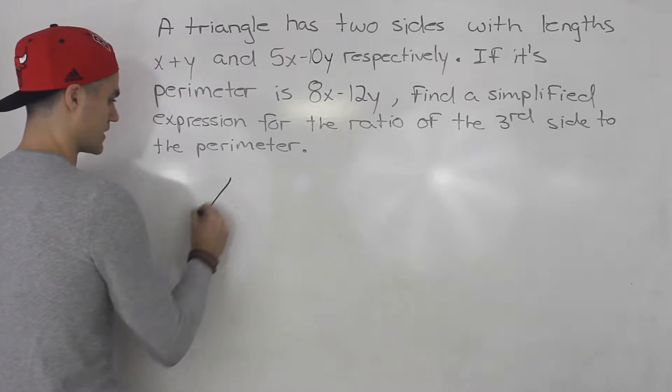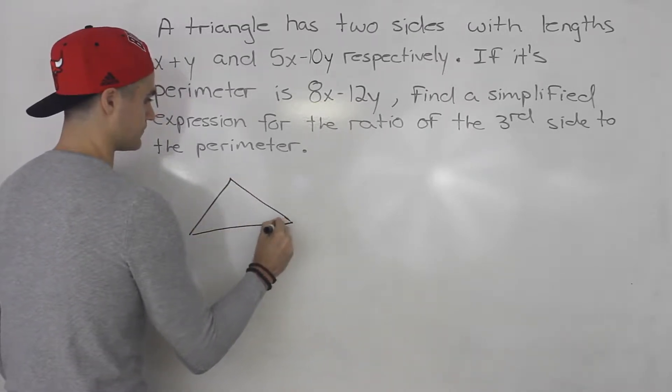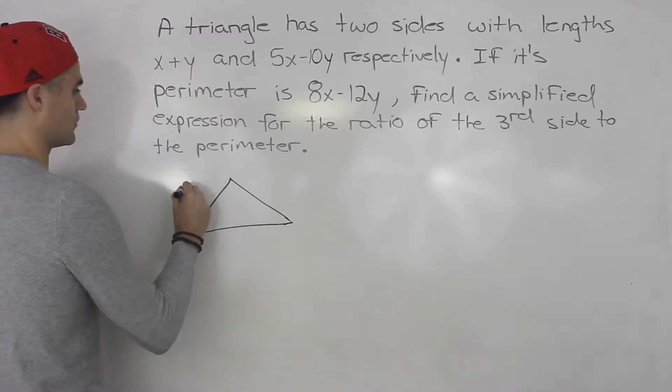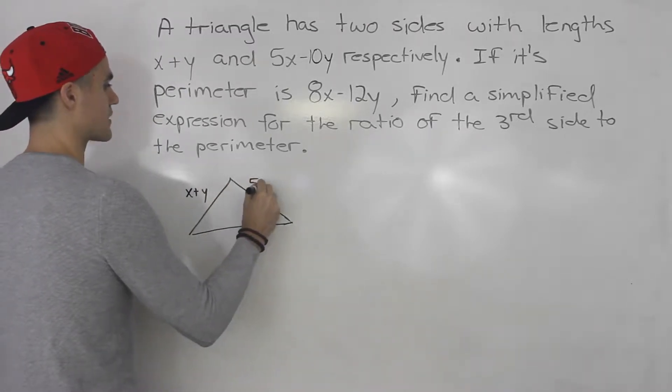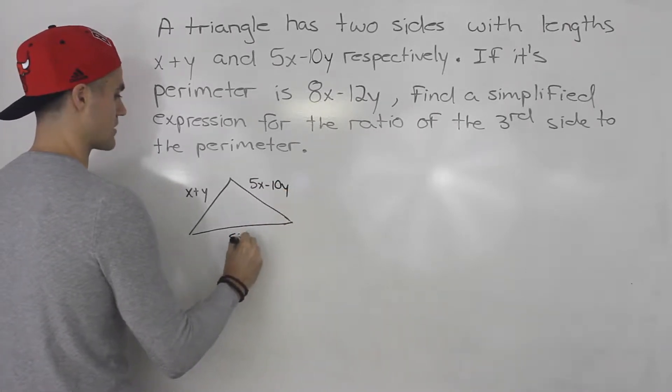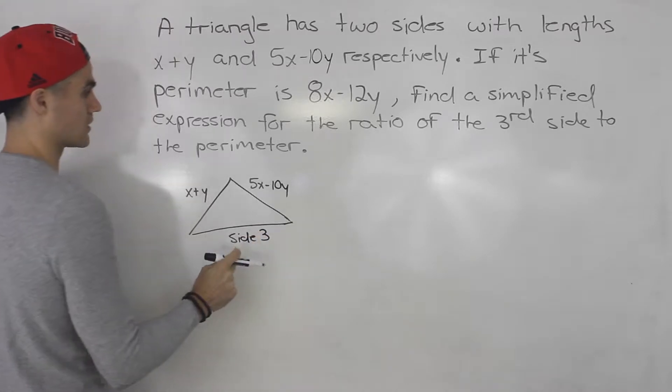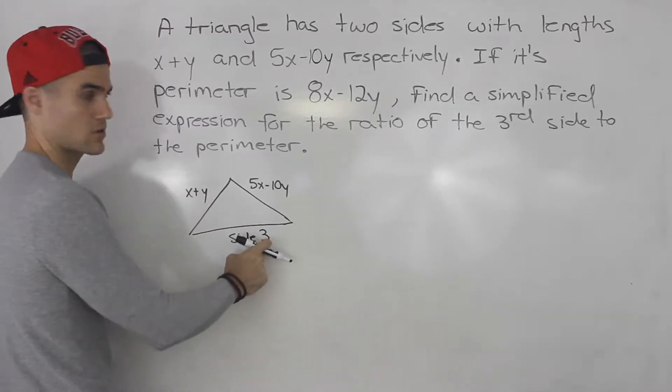So let's draw a diagram of what we have so far. We have this triangle here. We're told this side is x plus y, we're told this side is 5x minus 10y, and we have this side here, side 3. We're not told what the length of the third side is so let's just call it side 3.